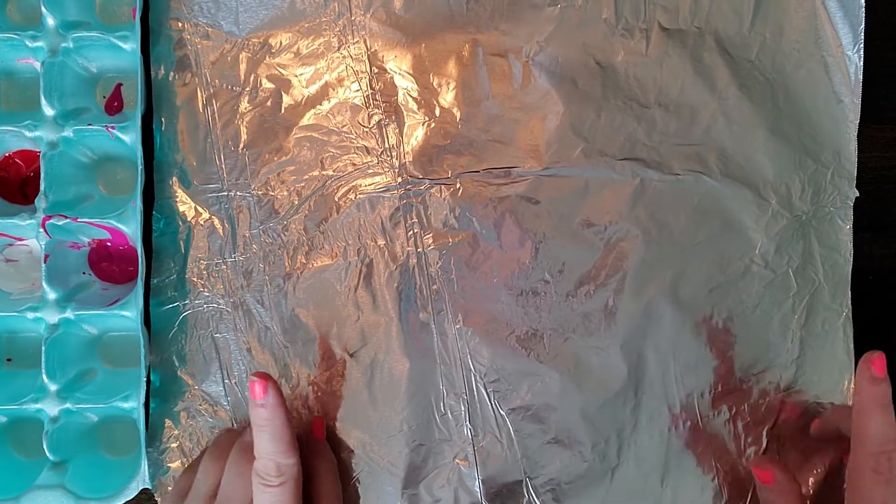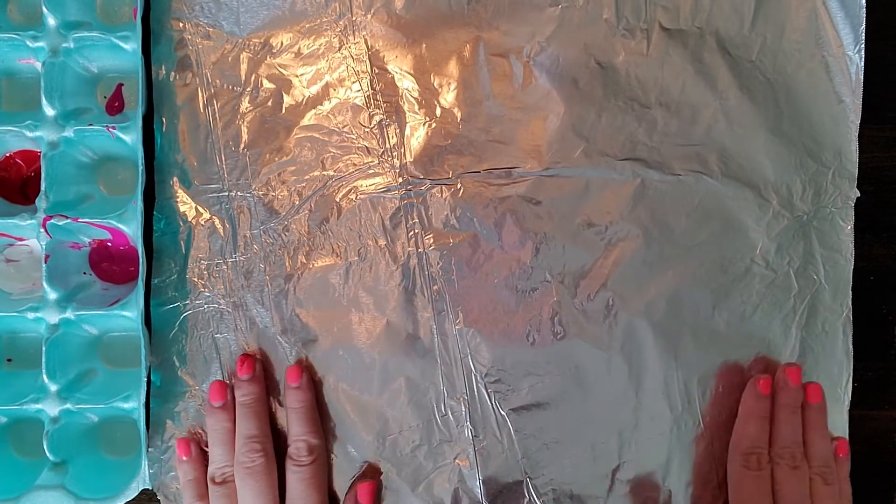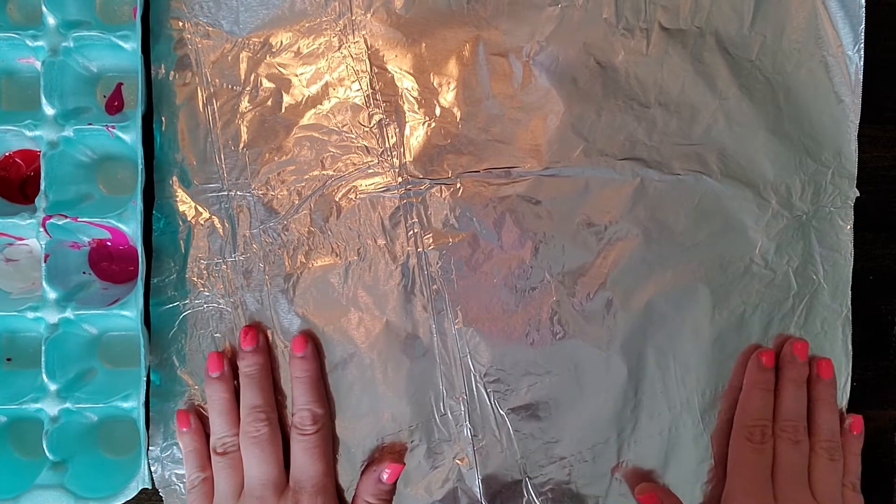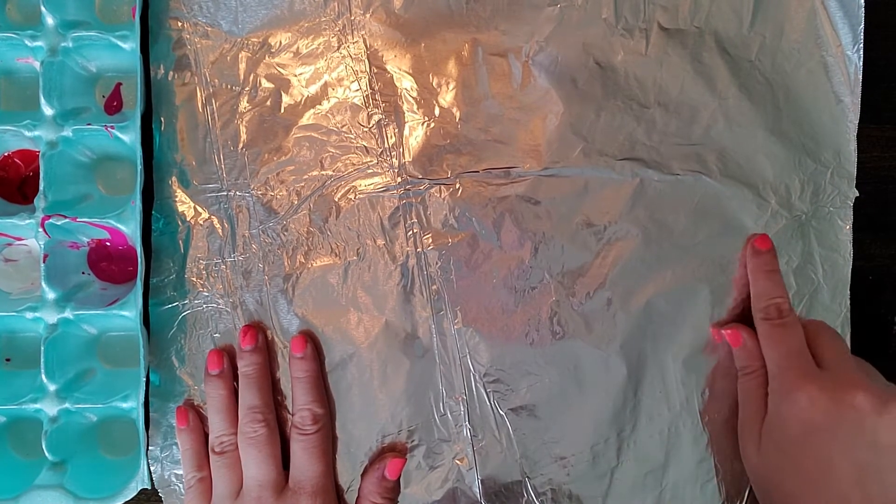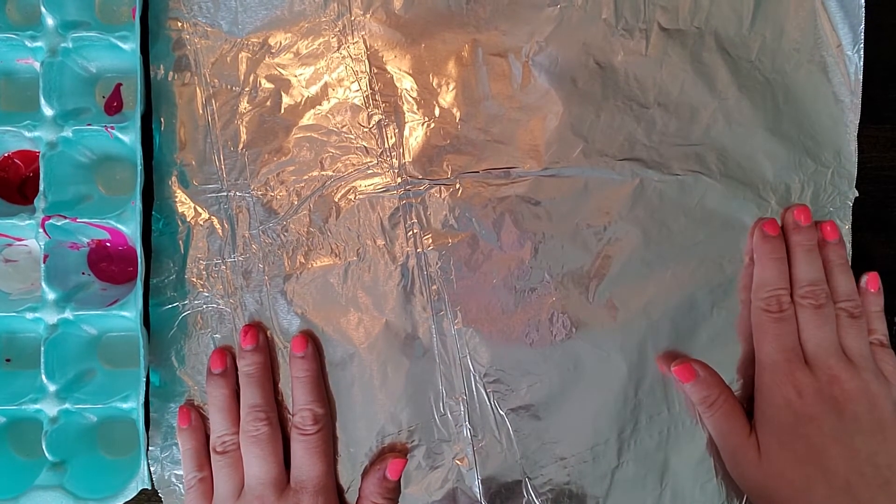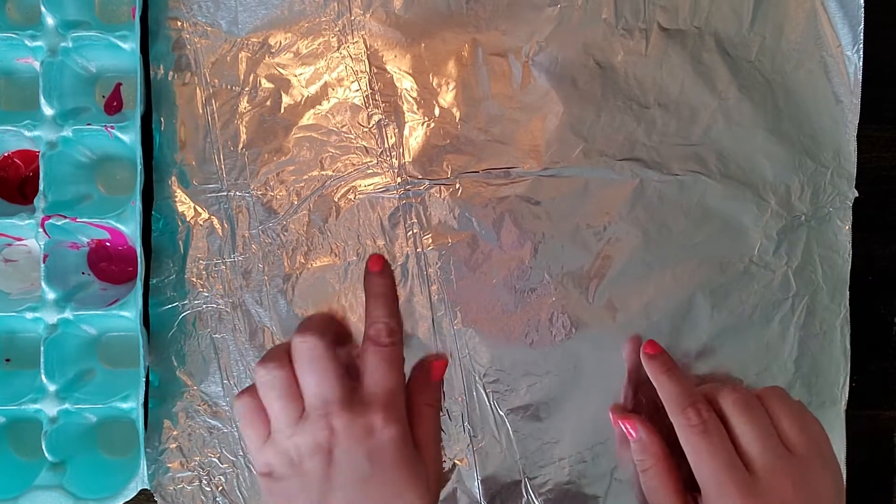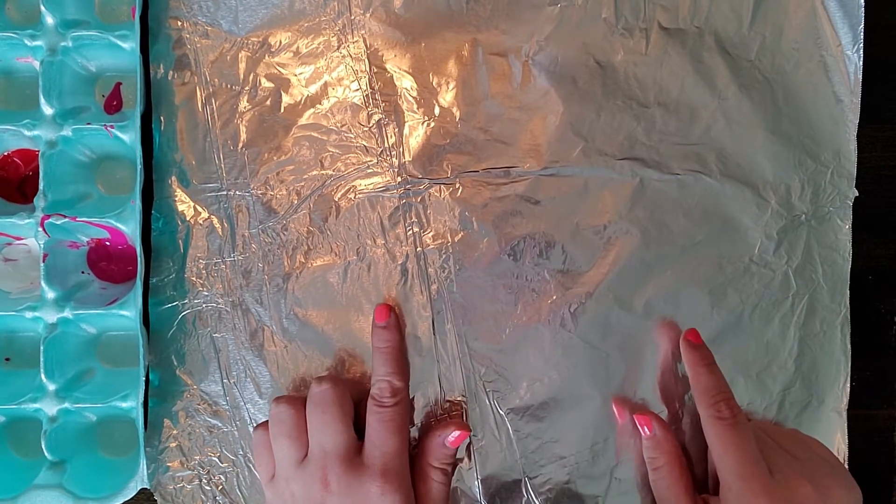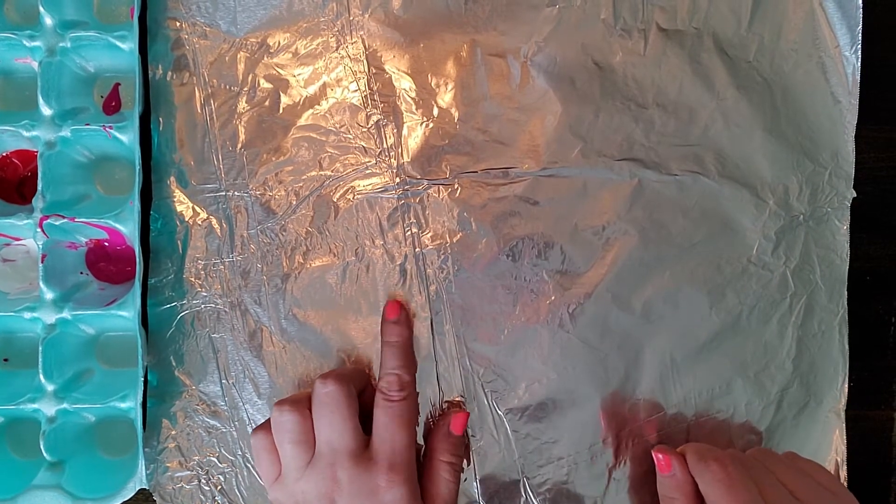So materials. The most important thing you need is a piece of tinfoil, which you can find in your kitchen. And I taped my tinfoil down to the table. This is what we're going to be using to create our prints. So this is a really important material.